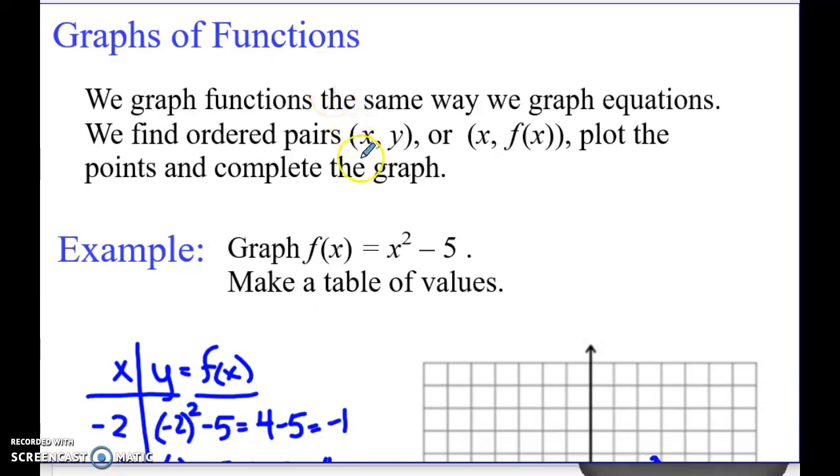The only difference is instead of having an ordered pair labeled x, y, we say it's x and f of x. So our f of x here is really just another name for our y value. Then we plot the points and complete our graph.